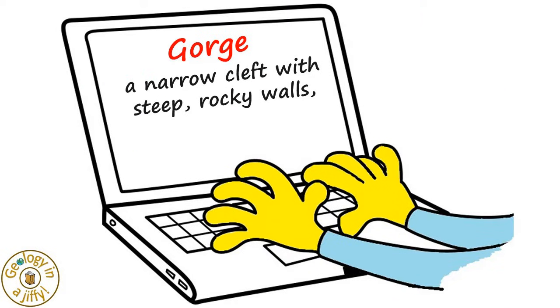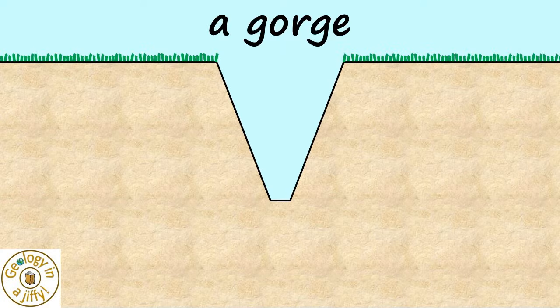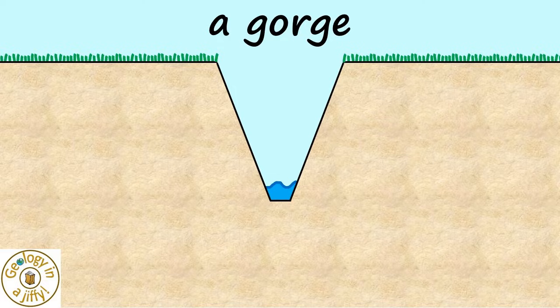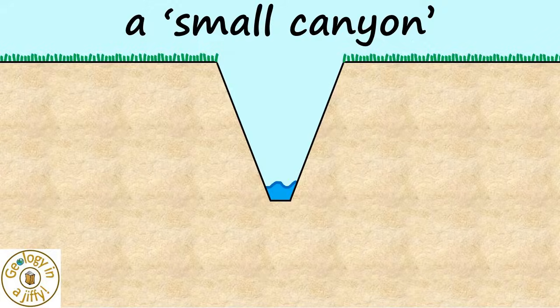A gorge is a narrow cleft with steep rocky walls, like this, especially one through which a stream runs, like this. Gorges are also termed small canyons.